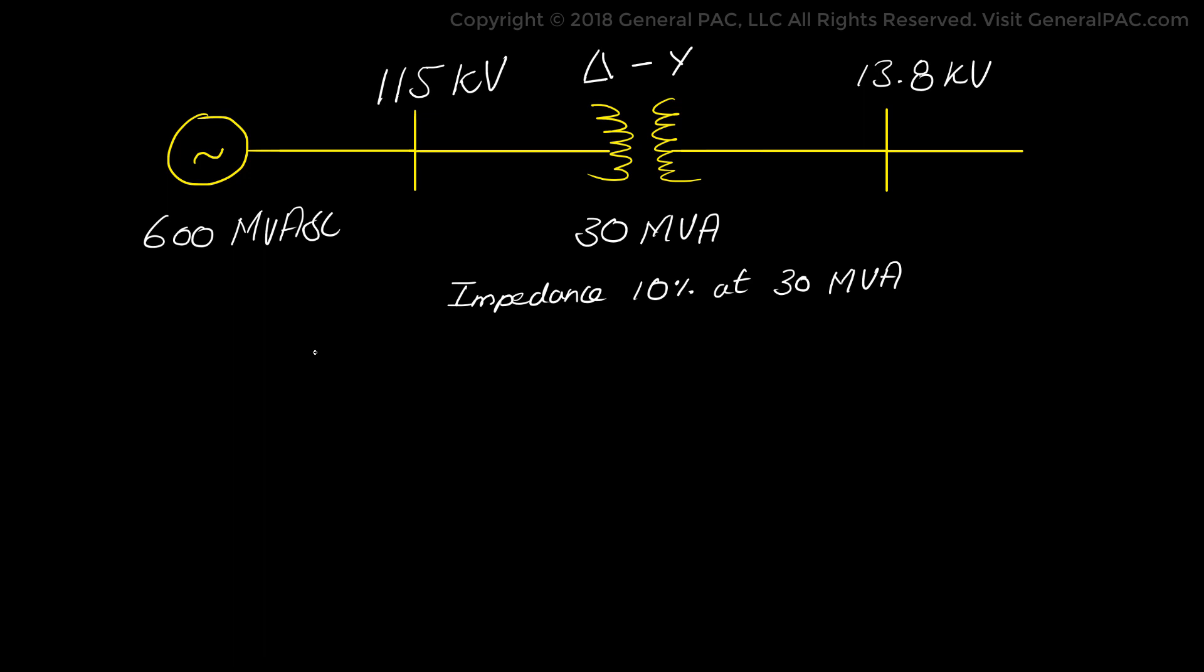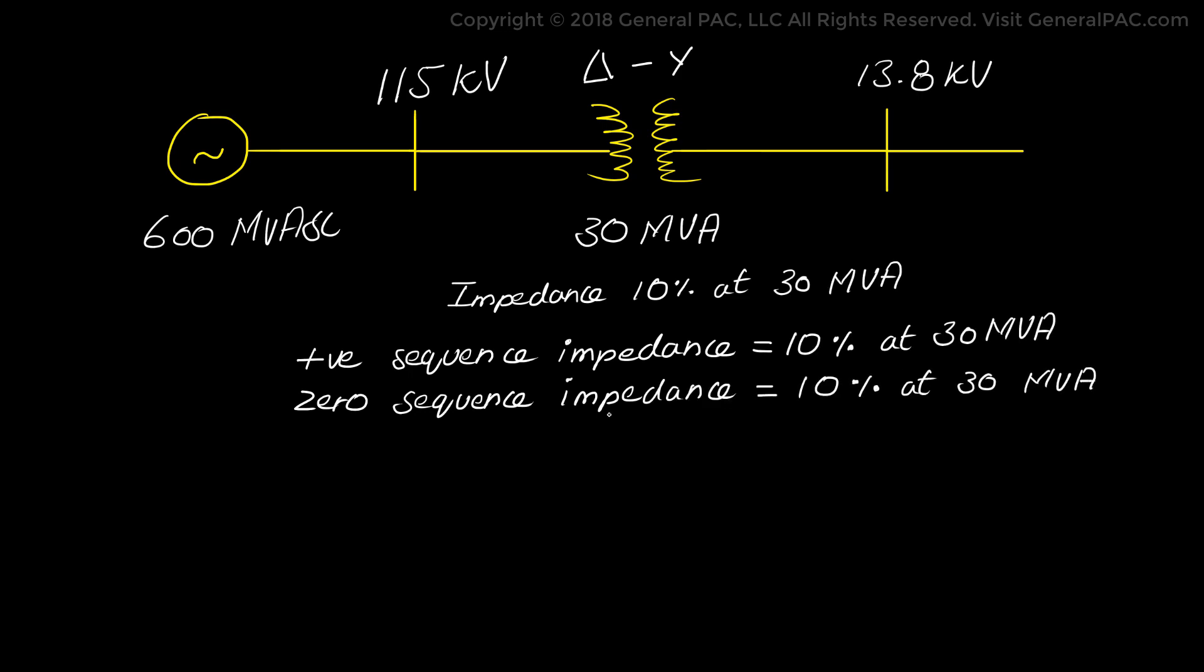Now we will add additional information by saying that the positive sequence impedance is 10% at 30 MVA and we will also claim that the zero sequence impedance is also 10% at 30 MVA. Now remember our objective here is to convert the system impedances to per unit values or per unit equivalent and that will simplify our fault calculations quite a bit down the road.